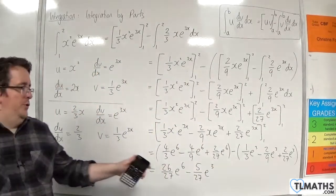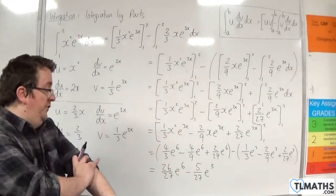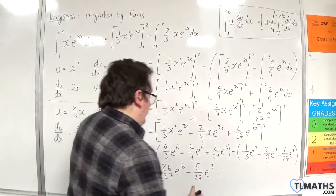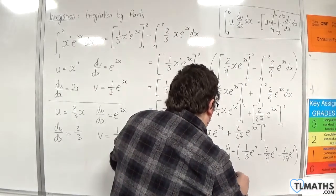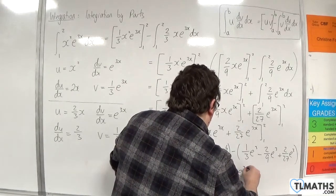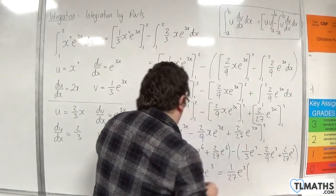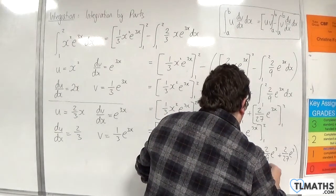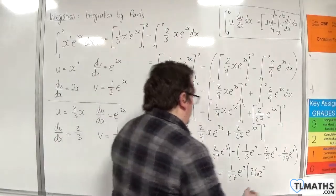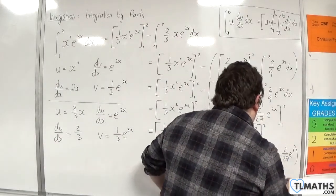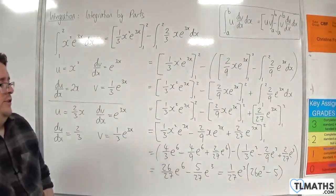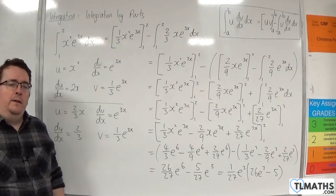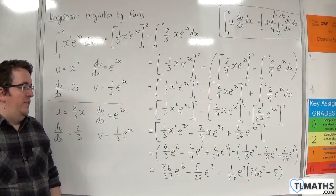You could factorise that if you wanted to — you could write it as 1 over 27 times the quantity 26 e to the 6 take away 5 e to the 3. Whether you write it in that form depends on whether the question specifically asks for a particular form.